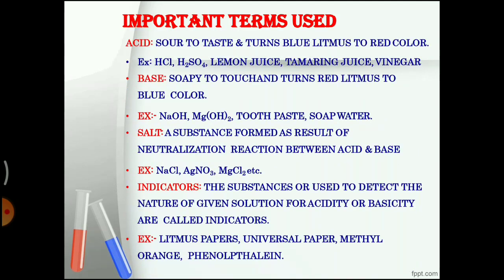In this chapter, the important terms we use: Acid. Acids are sour to taste and turn blue litmus to red. Examples: HCl, H2SO4, lemon juice, tamarind juice, and vinegar.